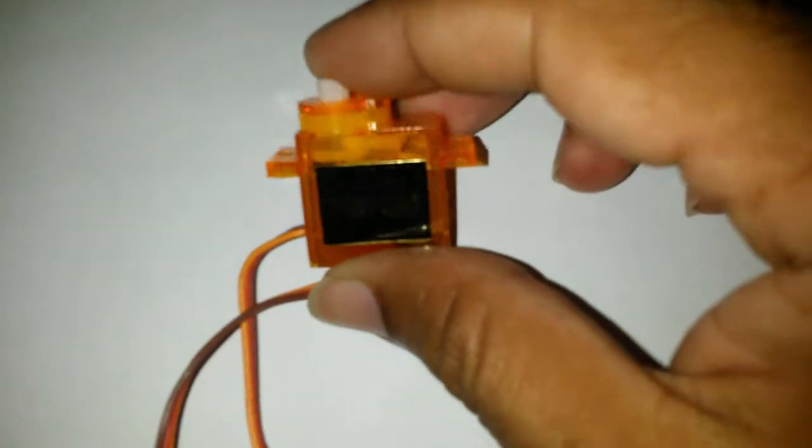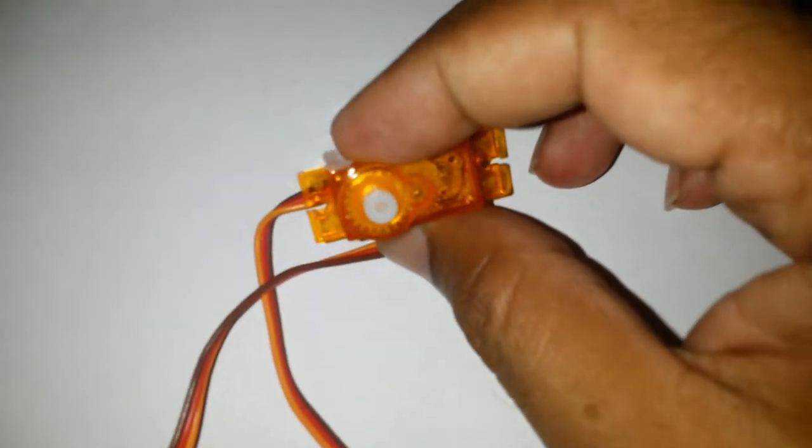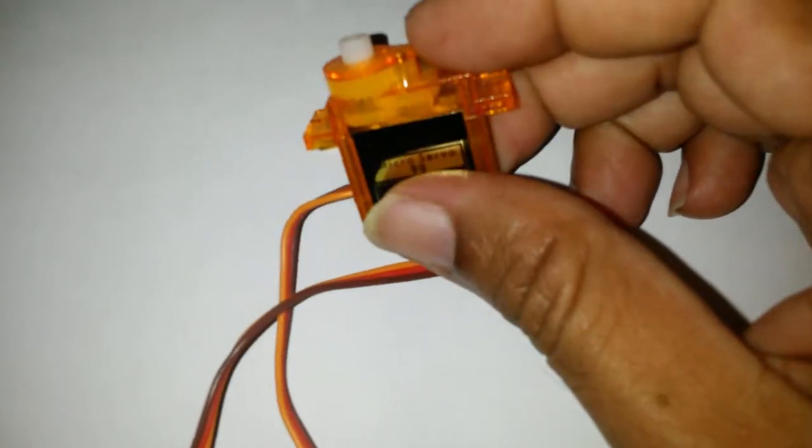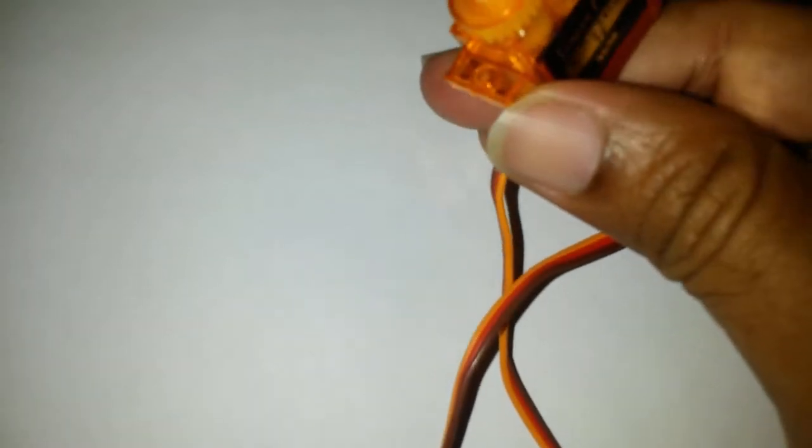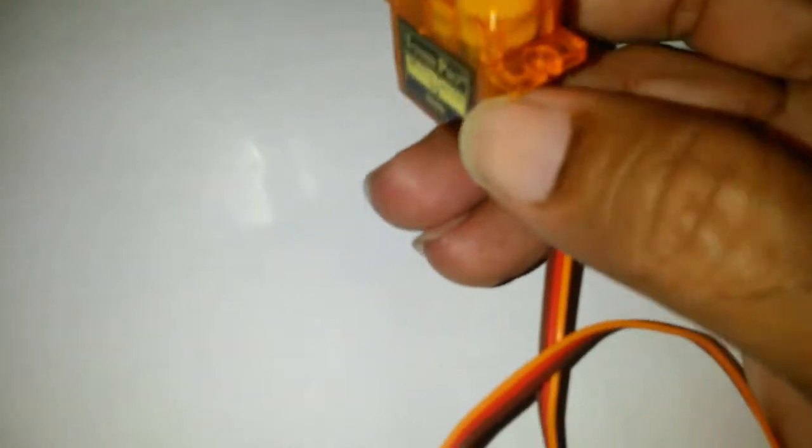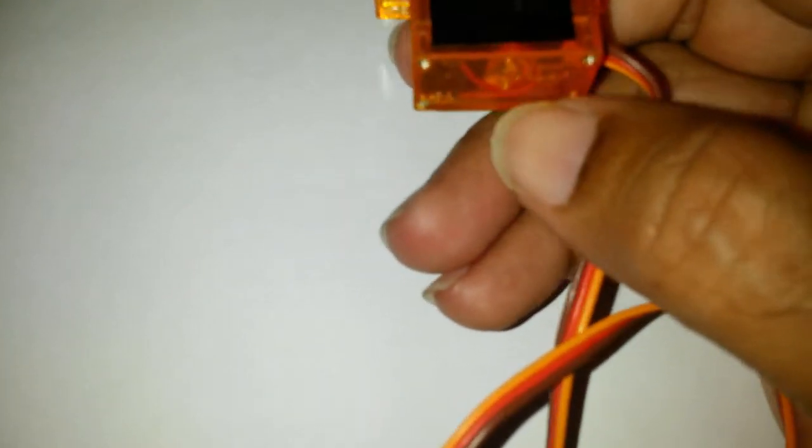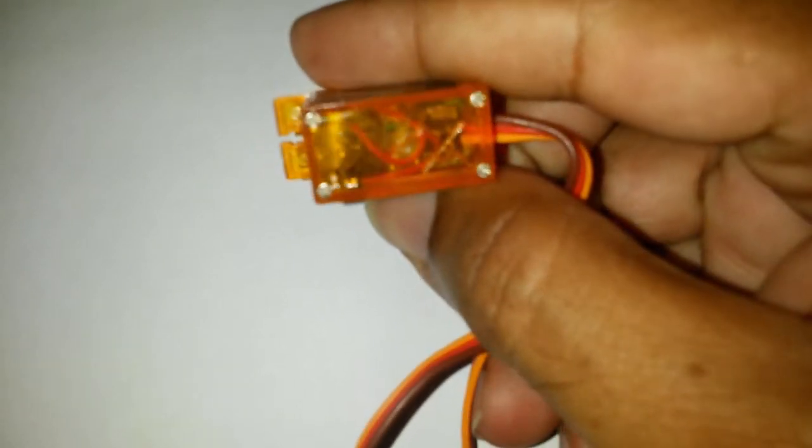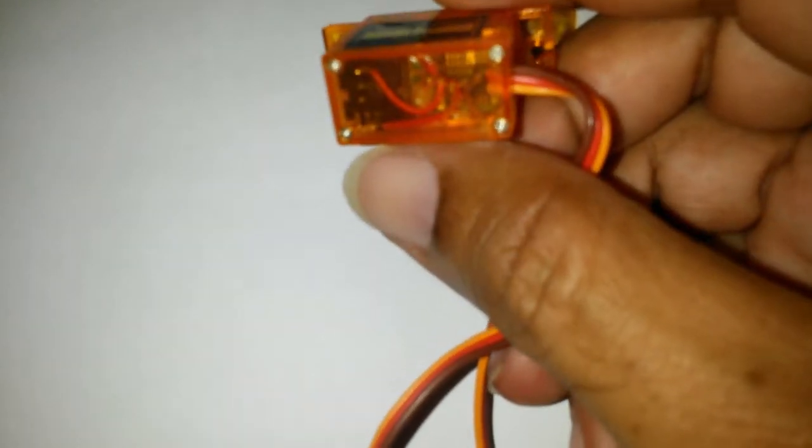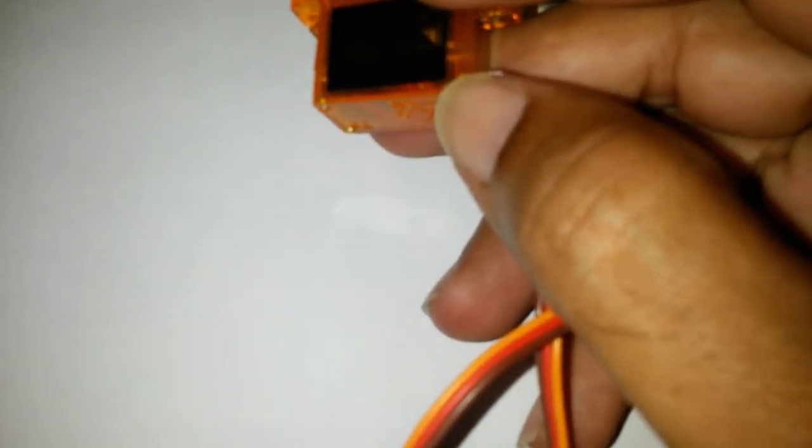Today let's do a quick review of the SG90. This is a small servo controller, essentially a motor with a gear train and significant reductions. There's a small circuit board inside, barely visible. I'm going to open it and have a look to see what's inside.